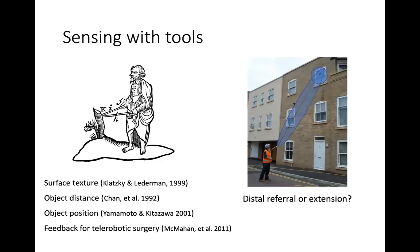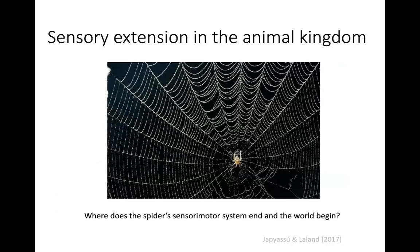We return to some similar conceptual issues here. Are all of these results just a referral, or actually extension? Because in all of these cases, the touch only occurred at the tip of the tool and not along the entire tool. There are actually cases of sensory extension in the animal kingdom, and we just have to go outside of the human sense.